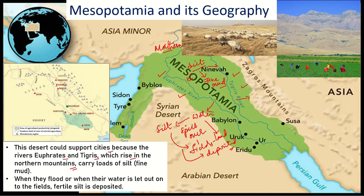Because these rivers start in the northern mountains, they carry loads of silt with them. When flooding occurs, the water is let out into the fields, and along with the water, fertile silt is also deposited in those fields. This is what made it possible to do agriculture in this region, especially in the southern cities.